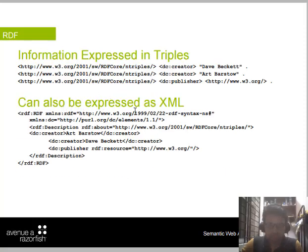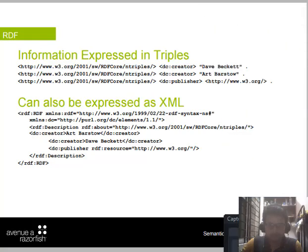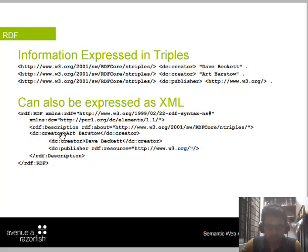The same things can also be expressed in XML. In RDF/XML format, we write 'rdf:RDF' with an xmlns namespace declaration. The triples we wrote earlier are now represented as XML tags — for example, a 'dc:creator' element containing 'Adam Pasto' as the creator. Every tag that is opened must be properly closed.